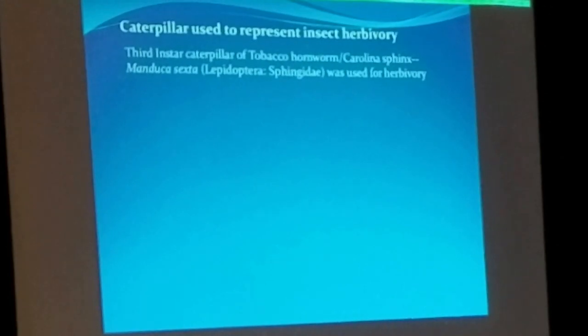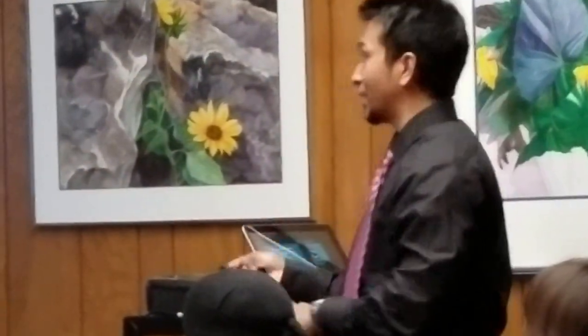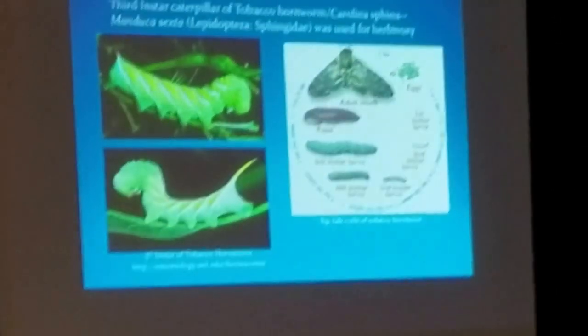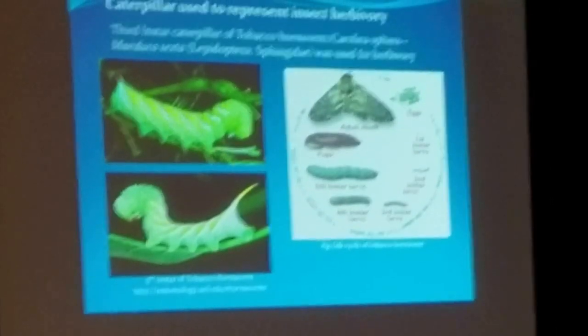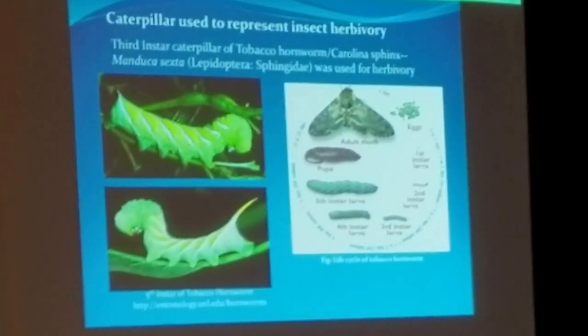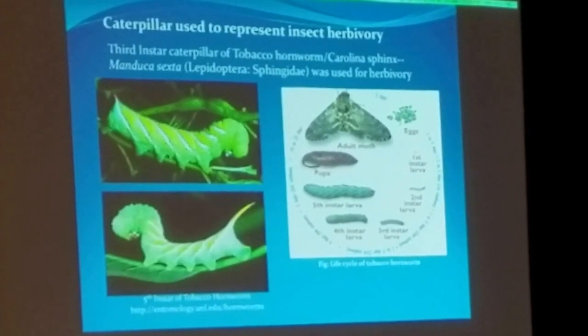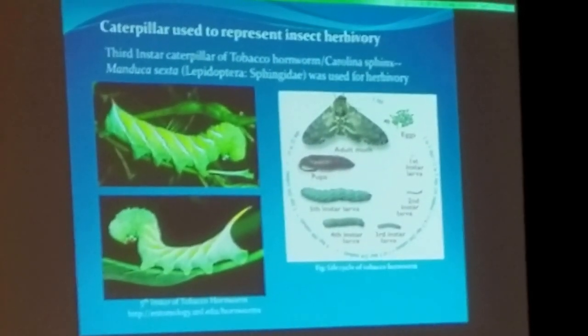Which caterpillar did I use? I used Manduca sexta, that is the tobacco hornworm. It is one of the major pests of the United States. This caterpillar mainly feeds on the foliage of solanaceous plants. I use the fifth instar larva — this larva is the most voracious and vigorous one in their life cycle.